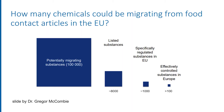Unfortunately, that's not all. There are even more chemicals potentially migrating into food — Dr. McCombie estimates this number to be up to 100,000 different chemicals, many of which are essentially unknown. These are the NIAS. So this is, of course, a problem.